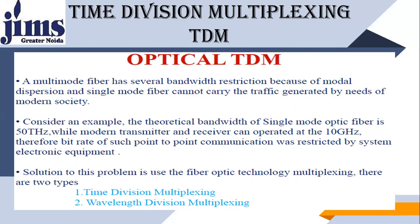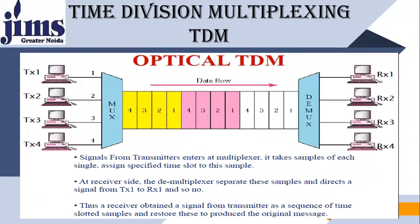For optical systems, two types of multiplexing are used: Time Division Multiplexing and Wavelength Division Multiplexing. In this optical TDM figure, we have four different sources — TX1, TX2, TX3, and TX4. A multiplexer combines all information from these four sources. The frames contain time slots. The demultiplexer is the opposite of the multiplexer, separating data according to RX1, RX2, RX3, and RX4.